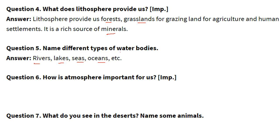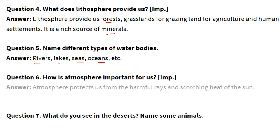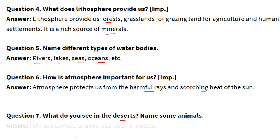How is the atmosphere important for us? The atmosphere protects us from harmful rays and the scorching heat of the sun, like ultraviolet rays and the intense heat. In the deserts, animals we see include camels, snakes, lizards and insects.